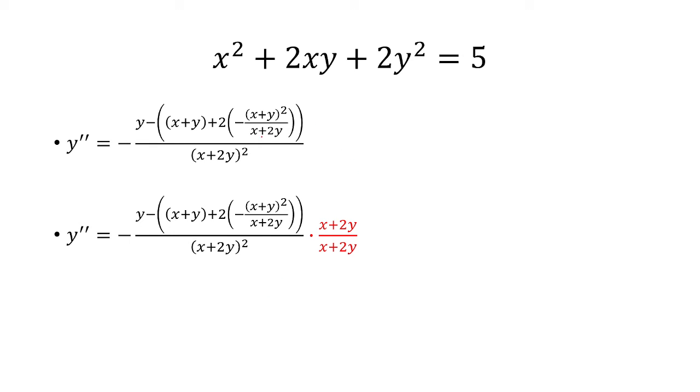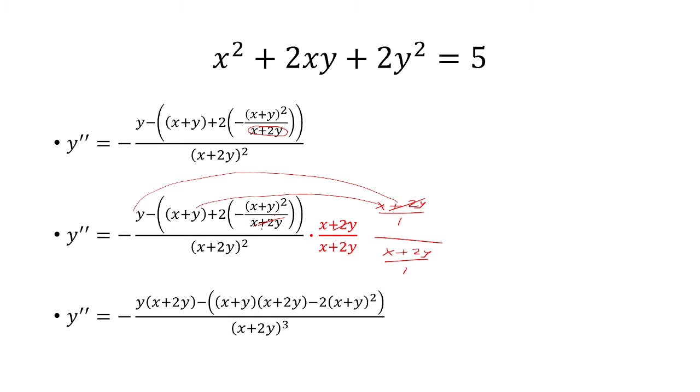Now I'm going to multiply top and bottom by x plus 2y. Because I don't like that I have an x plus 2y here. So that x plus 2y is going to cancel. And really you want to think of this as like x plus 2y over 1 divided by x plus 2y over 1. So this doesn't quite look right. Because this x plus 2y will cancel with this. And then you would have to distribute to both the y and the x plus y. But the denominator, you have x plus 2y squared times x plus 2y. That's just x plus 2y cubed.